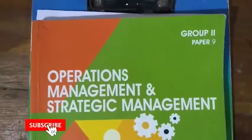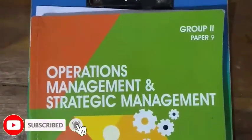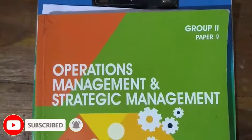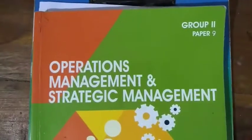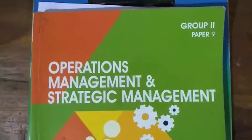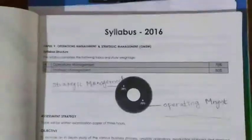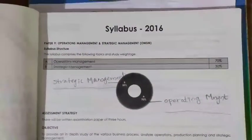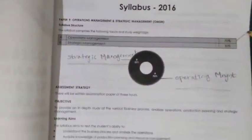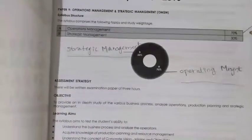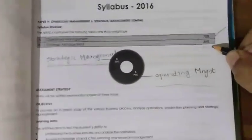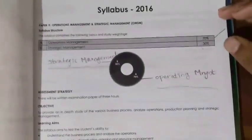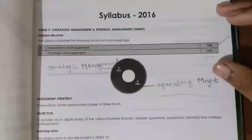Hello friends, welcome back to CMA Milena. In this video, we are going to cover Intermediate Group 2, the first paper, called Operation Management and Strategic Management. This subject is divided into 70% Operation Management and 30% Strategic Management. Group 2 is a scoring paper.